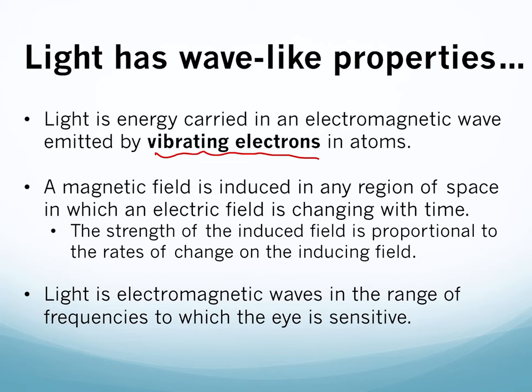The magnetic field is what we call induced — it's created from the electrical field. A magnetic field is induced in any region of space when an electric field is changing with time. Since our electric field is traveling and continually changing, it induces a magnetic field exactly perpendicular to it at 90-degree angles. The strength of this induced field is directly proportional to the rate of change of the inducing field — so if the electrical field increases, the magnetic field also increases.